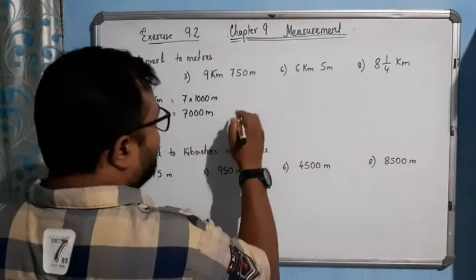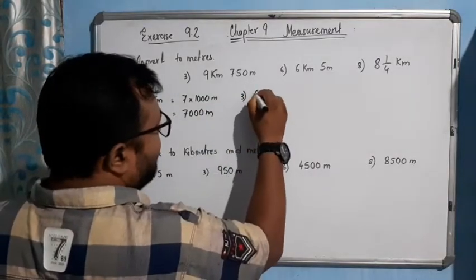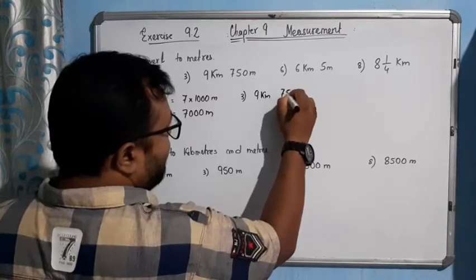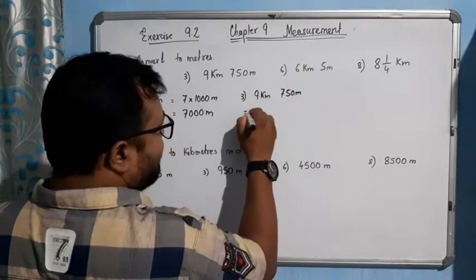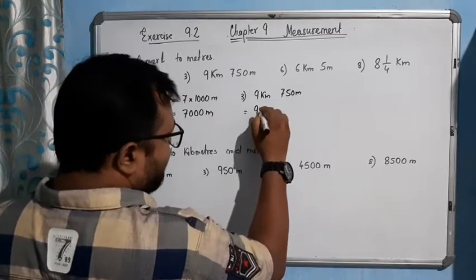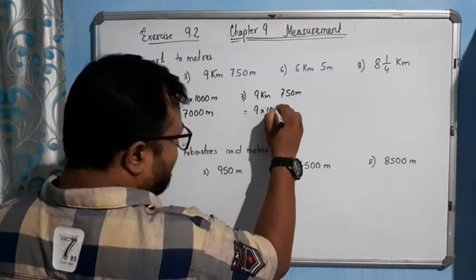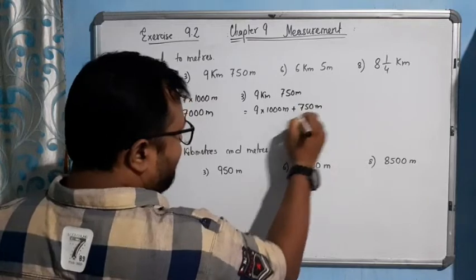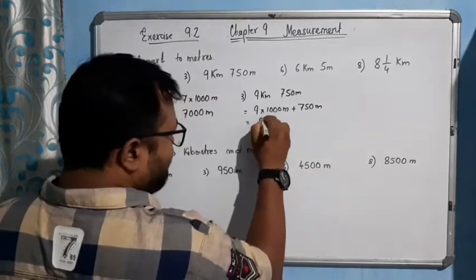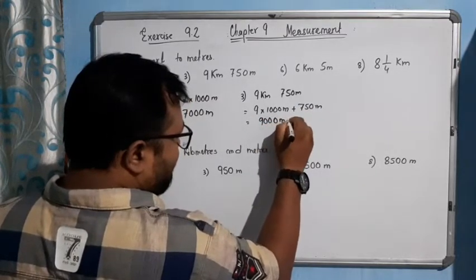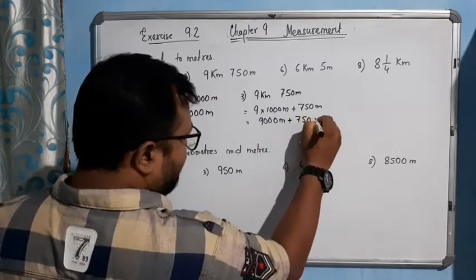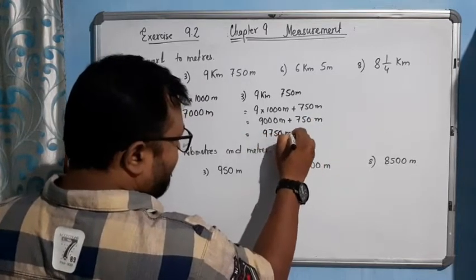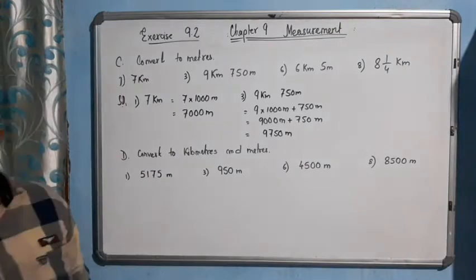Now let's talk about number two. 9 kilometers and 750 meters means 9000 meters plus 750 meters, which gives you 9750 meters.